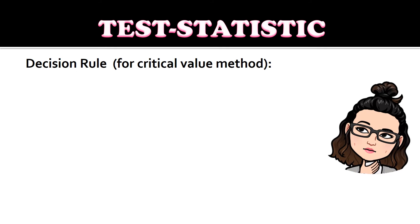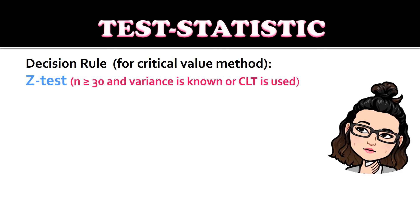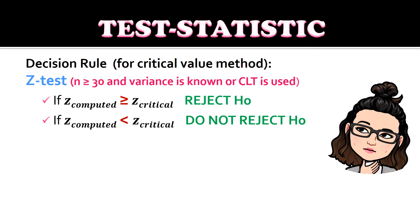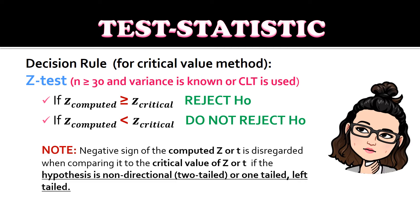For the test statistic, we use the same decision rule for the critical value method. Since we are using the Z-test — for sample size greater than or equal to 30 and when variance is known or when the central limit theorem is used — if the computed Z is greater than or equal to the critical value of Z, we reject the null hypothesis. If the computed Z is less than the critical value of Z, we do not reject the null hypothesis. Note that for a negative sign on the computed Z, the sign is disregarded when comparing it to the critical value if the hypothesis is non-directional (two-tailed) or one-tailed left-tailed.